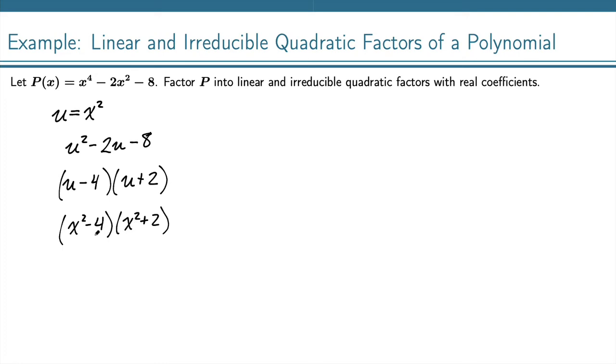Now we have two different quadratics. This first one we should recognize as a difference of squares. This is x squared minus 2 squared. So that factors as x minus 2 times x plus 2.